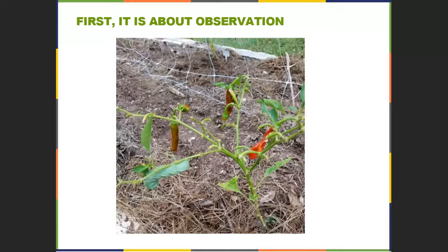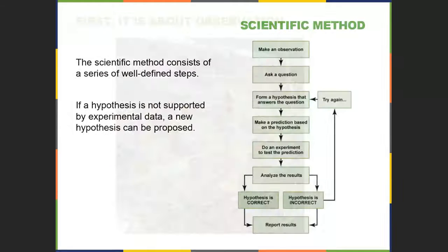We came up with some hypotheses, and then we saw the culprit — the culprit of what's eating my pepper plants is this big old gigantic caterpillar. We had some good hypotheses: we said there's a hailstorm, we said a raccoon came by and did some damage, and then somebody else brought up insect damage. And you can see there is insect damage — or at least the larval state of the insect.